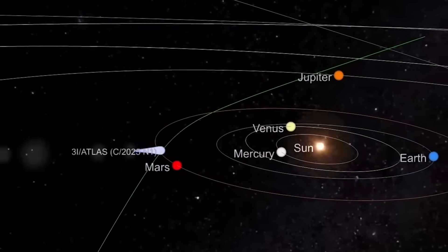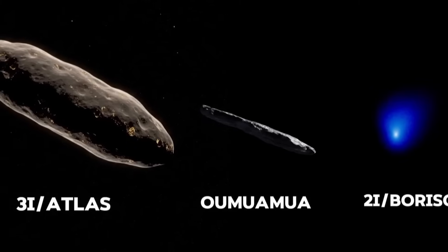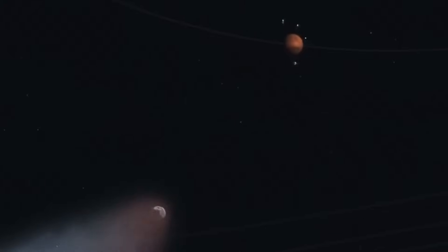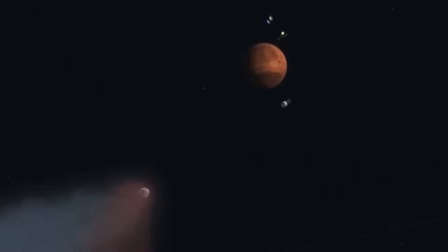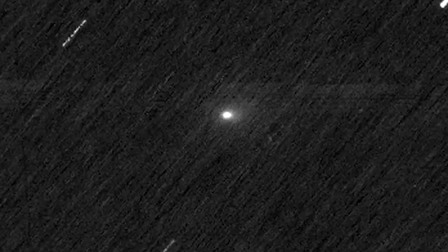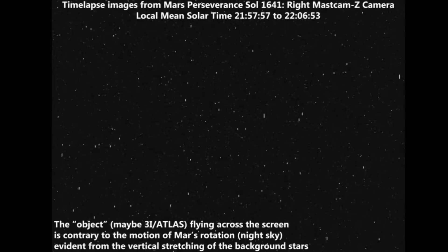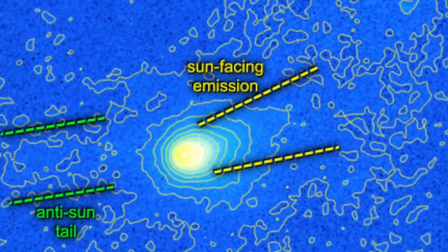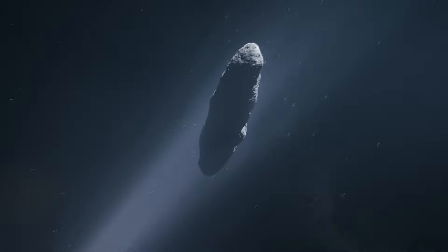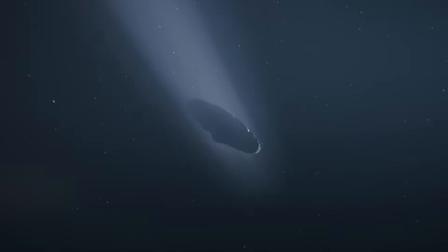This object is much larger than Oumuamua and Borisov, a major anomaly, as interstellar comets are usually lighter. It recently passed by Mars, and images from NASA, the European Space Agency, and the Hubble telescope show that its gas halo is expanding. But is its acceleration normal? No. Atlas has non-gravitational acceleration that is likely due to asymmetric gas ejection, but its intensity is greater than usual in known comets. This acceleration usually comes from gas ejection, but in Atlas, it is stronger, and may indicate unusual activities.